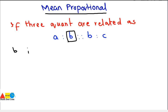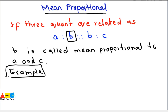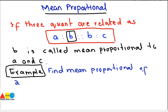So you can say that B is called mean proportion to A and C. Now let's see how you can find the mean proportional if you are given two quantities and how you can find the third one by using its standard form. The standard form is: A ratio B proportion B ratio C.